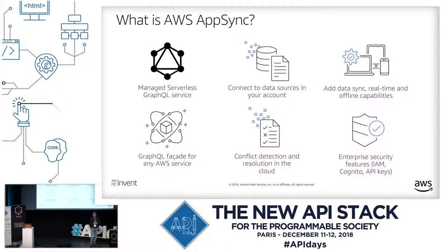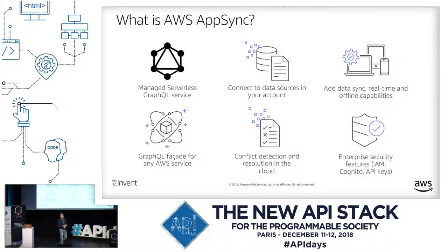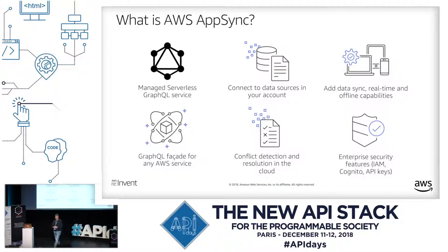So what is AWS AppSync? It's a managed serverless GraphQL service. That's a lot of words in one sentence. It's serverless — you don't need to manage your own server, you don't need to create your own virtual infrastructure, virtual machine, or EC2 instance. We do that for you, and we are going to scale and make it highly available for you. Whether you have three requests per hour or one million requests per hour, AWS is going to scale the infrastructure for you.